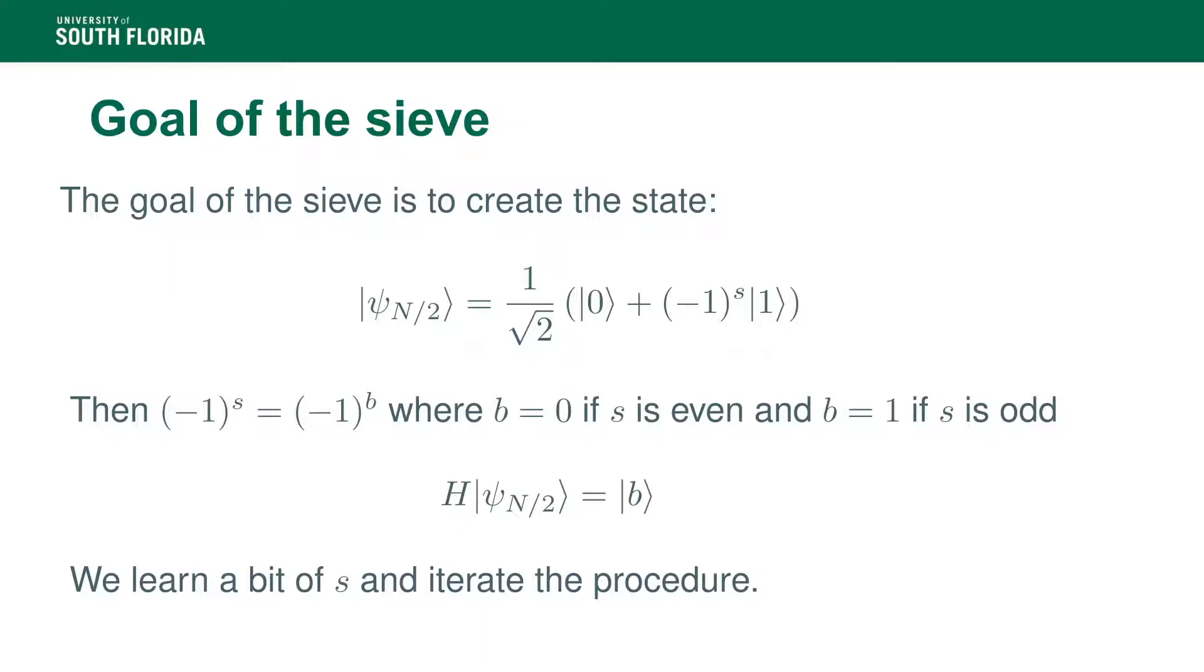The goal of the sieve is to create this state, which is parameterized by n over 2. And that state, given the shape of the coset state, is of this form where s is the secret that we're trying to figure out. Now, minus 1 to the s is essentially minus 1 to the last bit of s in its binary decomposition. And also, what's interesting here is that if you apply the Hadamard gate to that one-qubit state, you produce the state b, whose measurement will give you b with 100% chance. So, what it means is if, at the end of the sieve, we're able to create psi sub n over 2, then we learn one bit of s. And then, as we'll show at the end of this lecture, we can easily iterate the process and learn more bits of our secret. First, let's focus on learning that one bit.